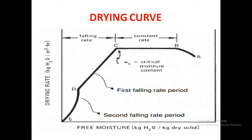Second one, falling rate period. Falling rate period is reached when the drying rate starts to decrease. Refer the figure. And the surface water activity falls to less than 1.